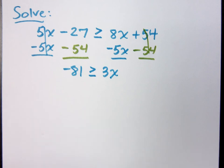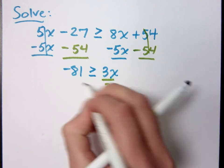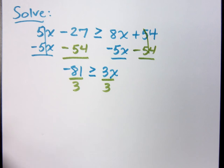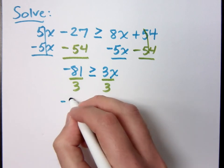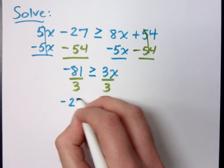And then what? Divide both sides by 3. What was that? Oh, and you get negative 27. I do get negative 27.